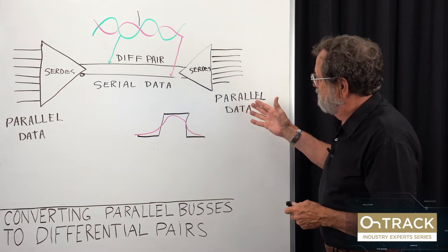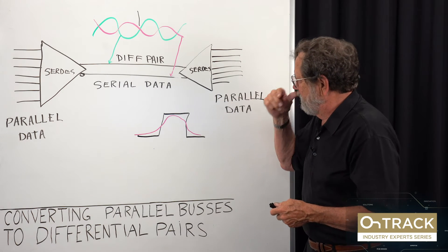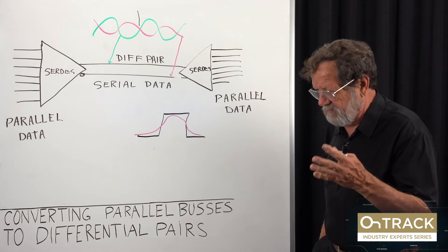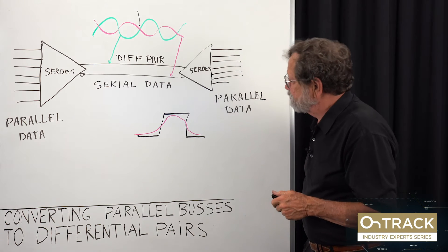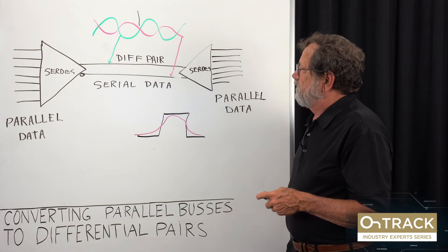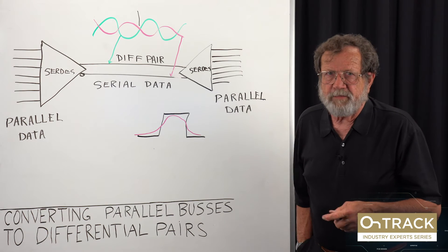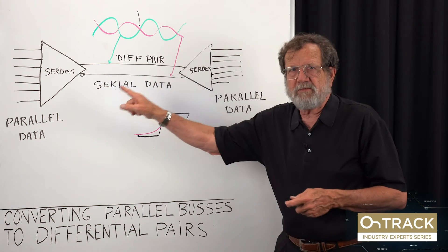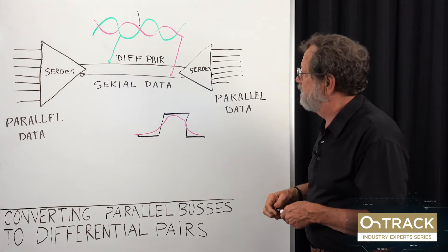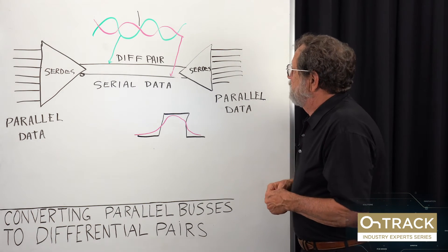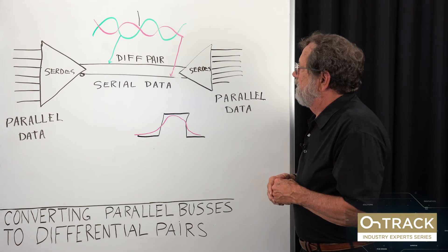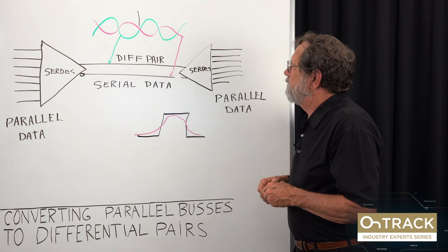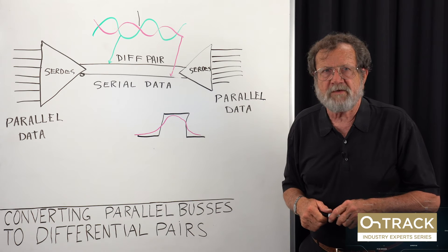So I hope that helps you understand a little bit about what differential pairs are. Maybe I should observe a couple of things. There's only a couple of things that matter in differential pairs. One is that the two be the same length, whatever the length tolerance is. And the other is that they not be interfered with by crosstalk from outside.